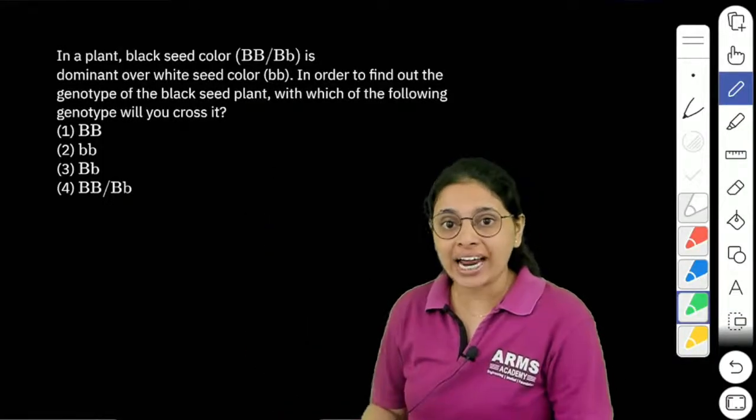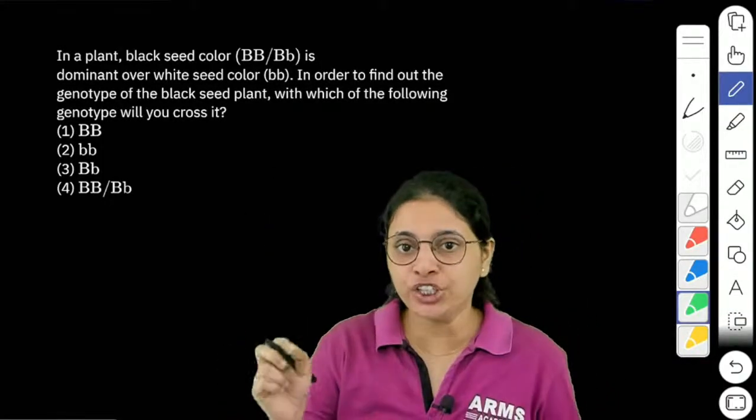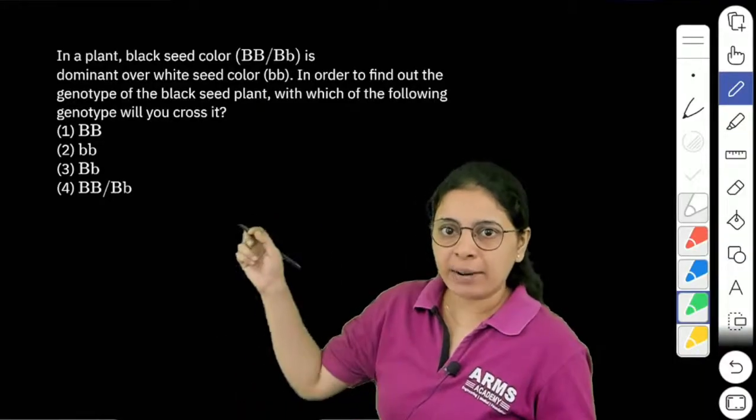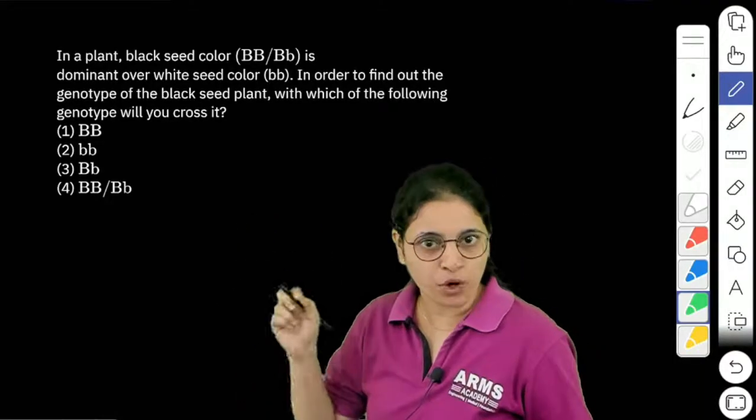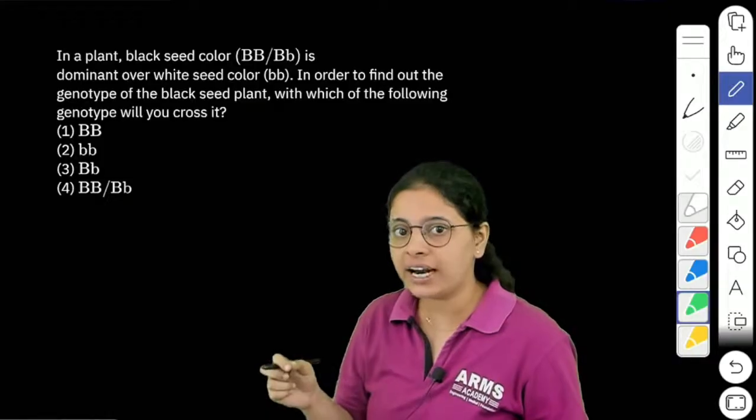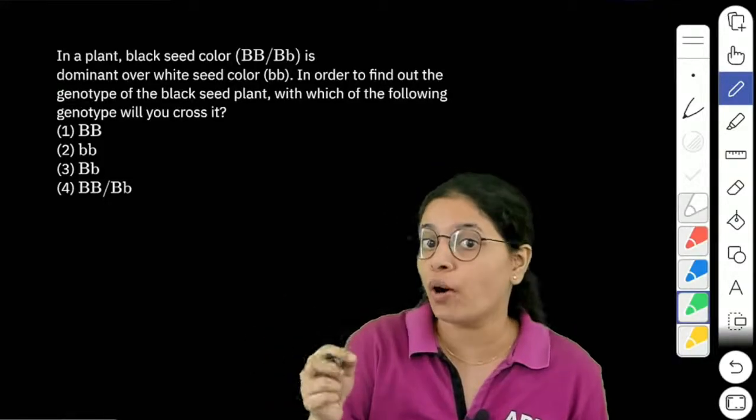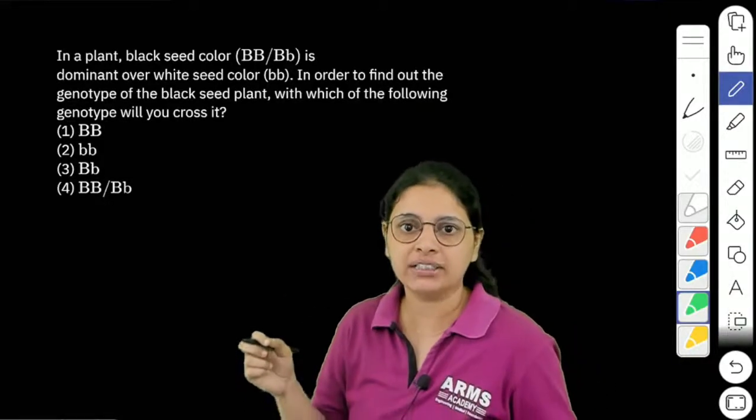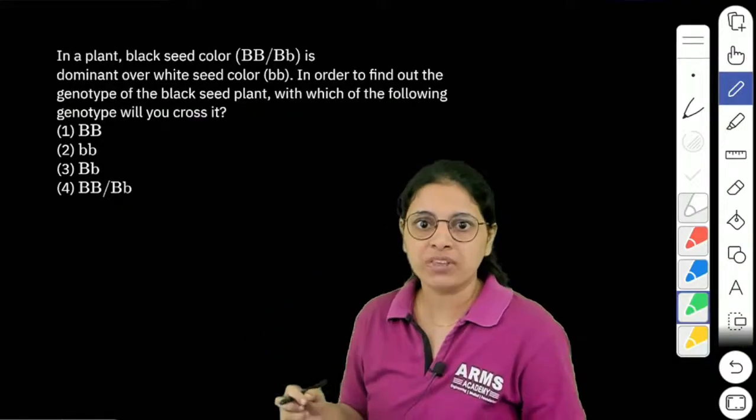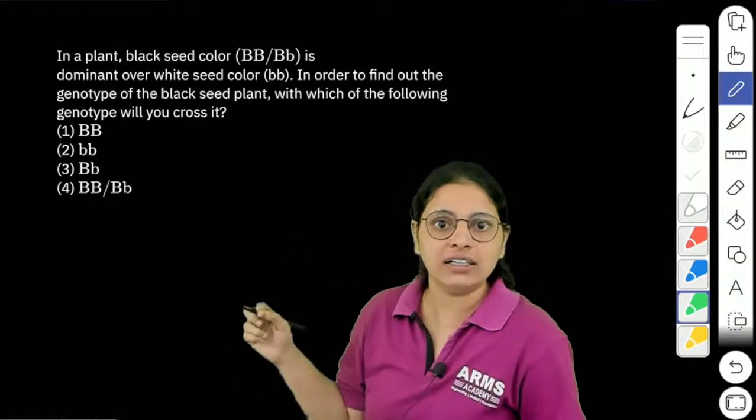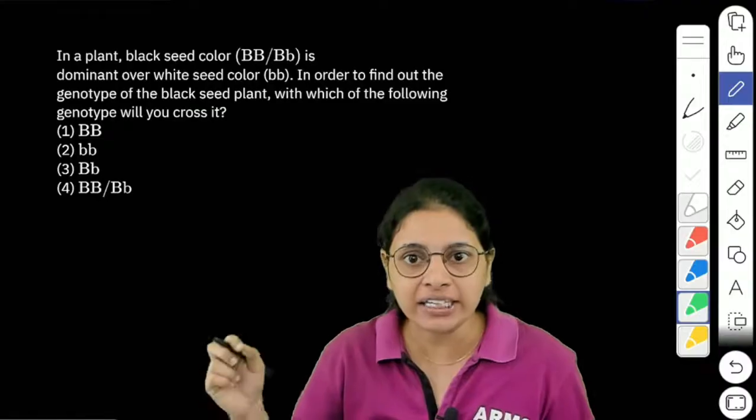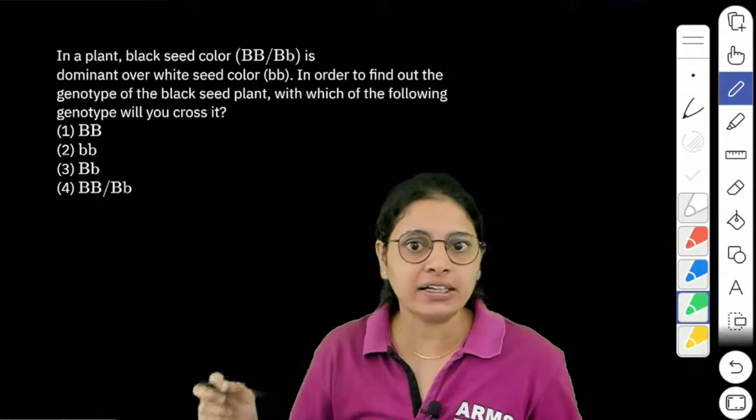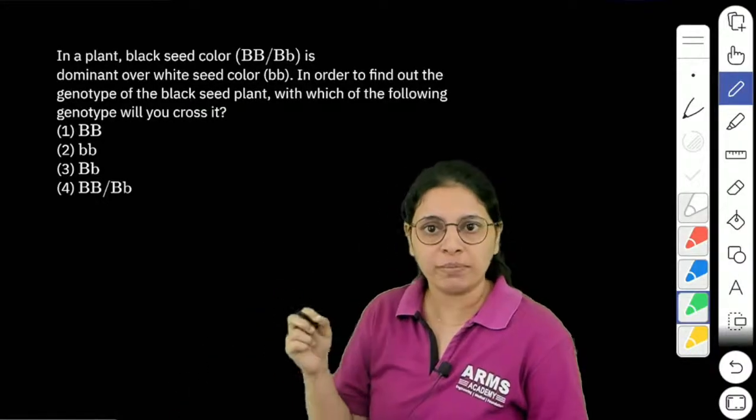In a plant, black seed color genotypes are given as BB or Bb. This means black color is dominant and represented by capital B. Black seed color is dominant over white seed color, and the white seed color plant's genotype is bb.